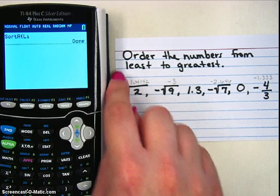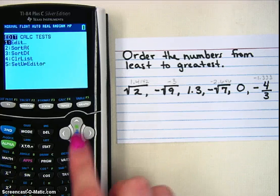So if I go back to STAT and look at my list and edit, I can see that they've ordered my numbers for me.